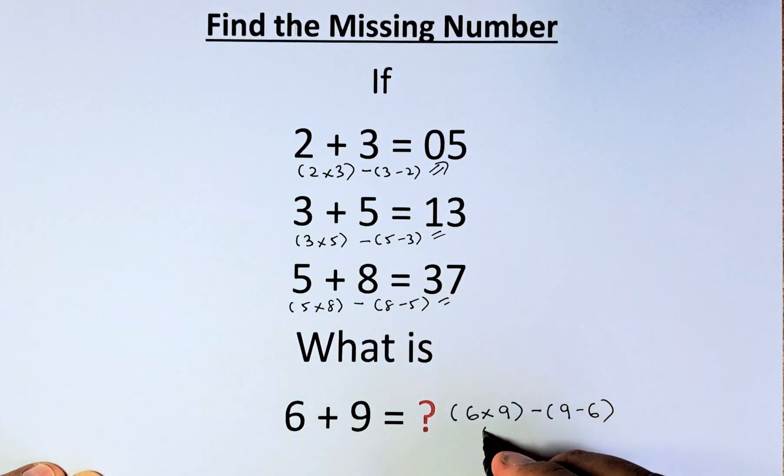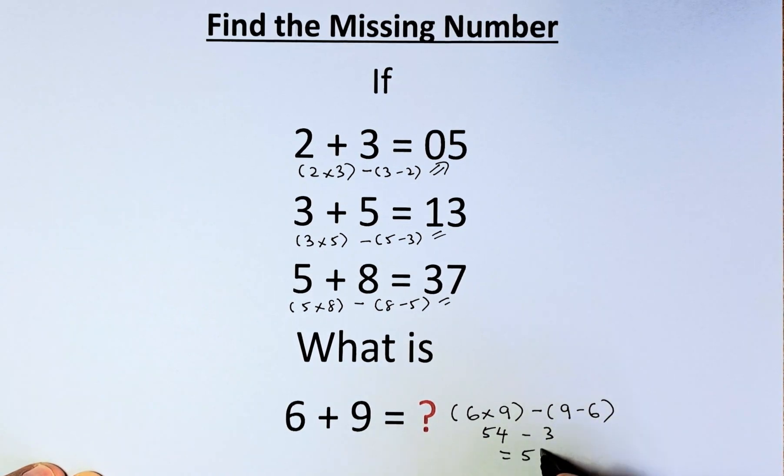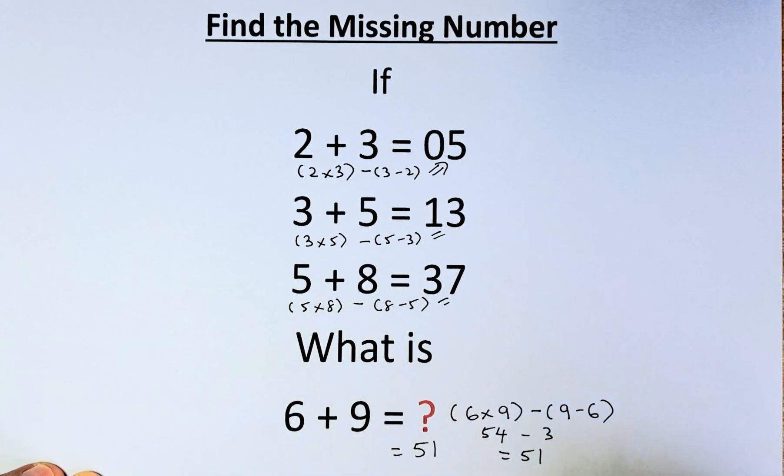So 6 times 9 is 54, 9 minus 6 is 3, so 54 minus 3, and the answer is 51. So the question mark is represented by the number 51.